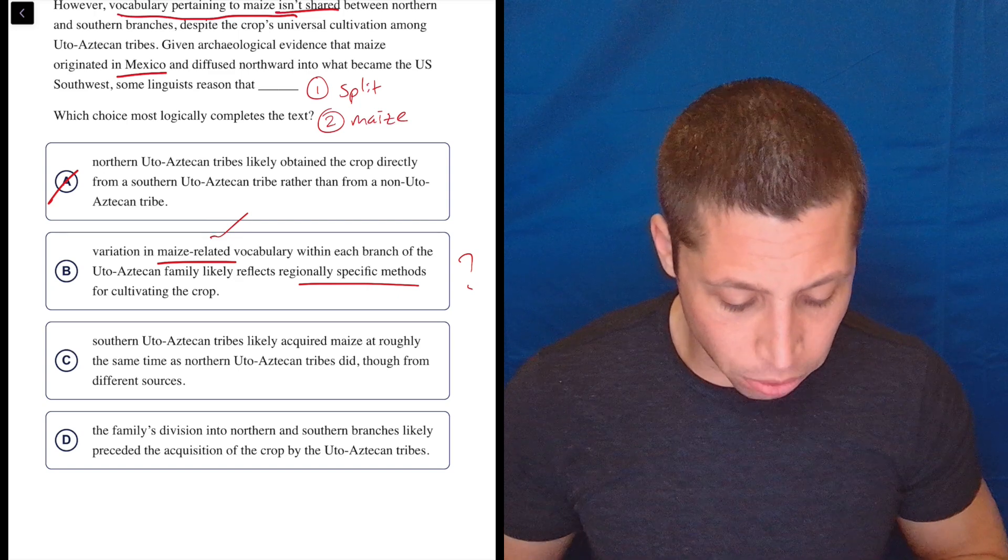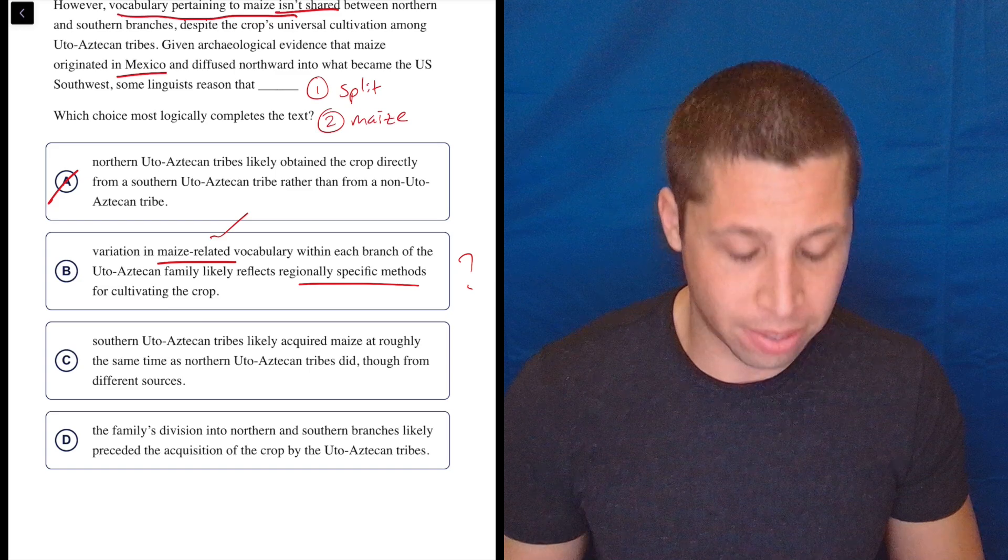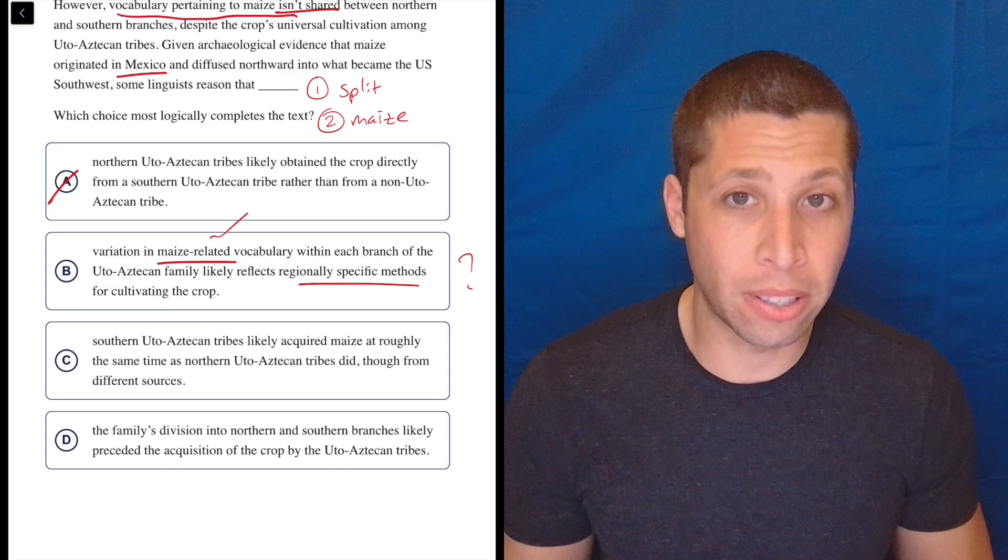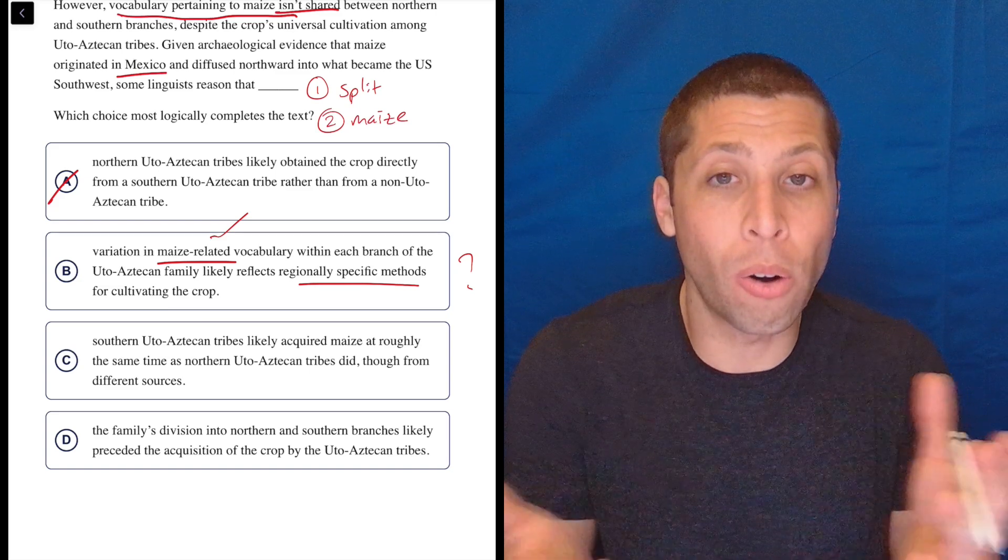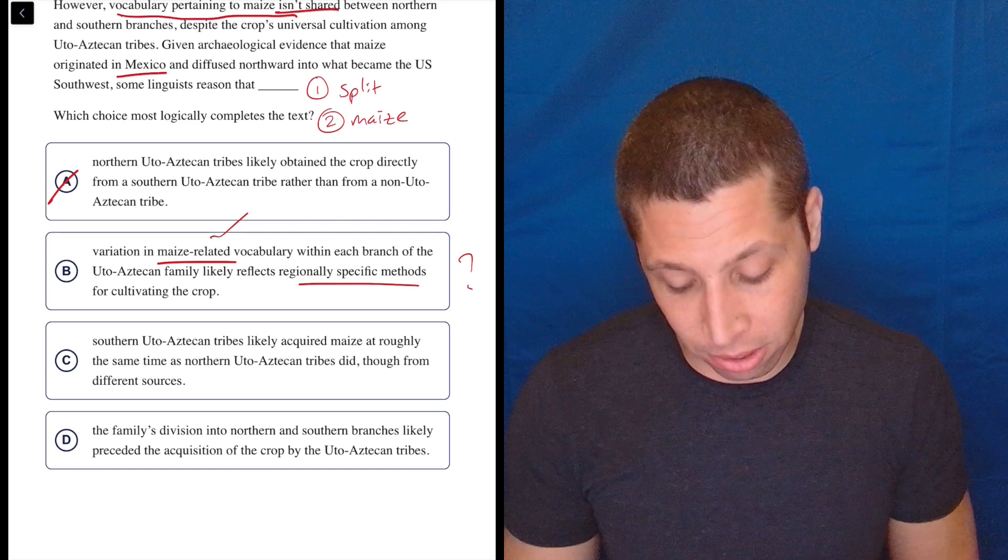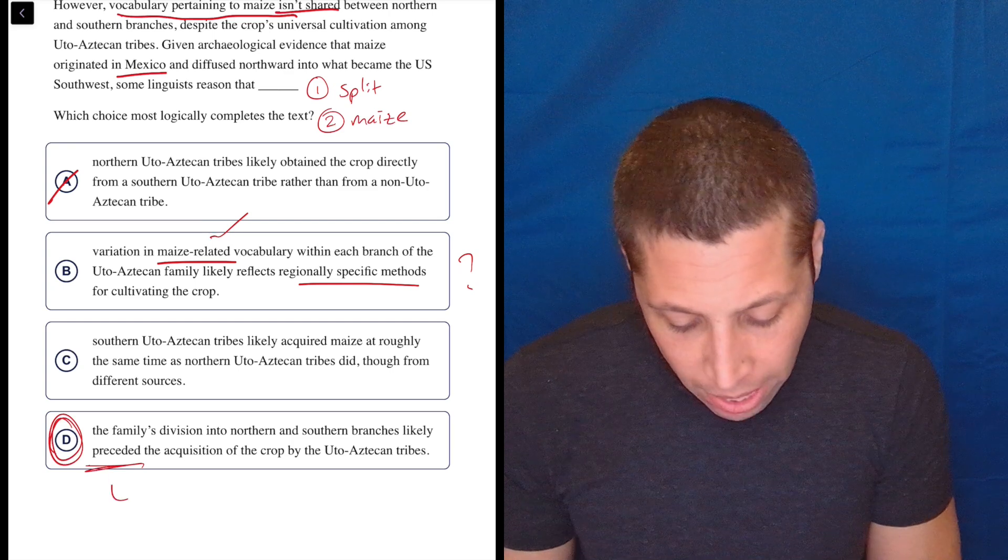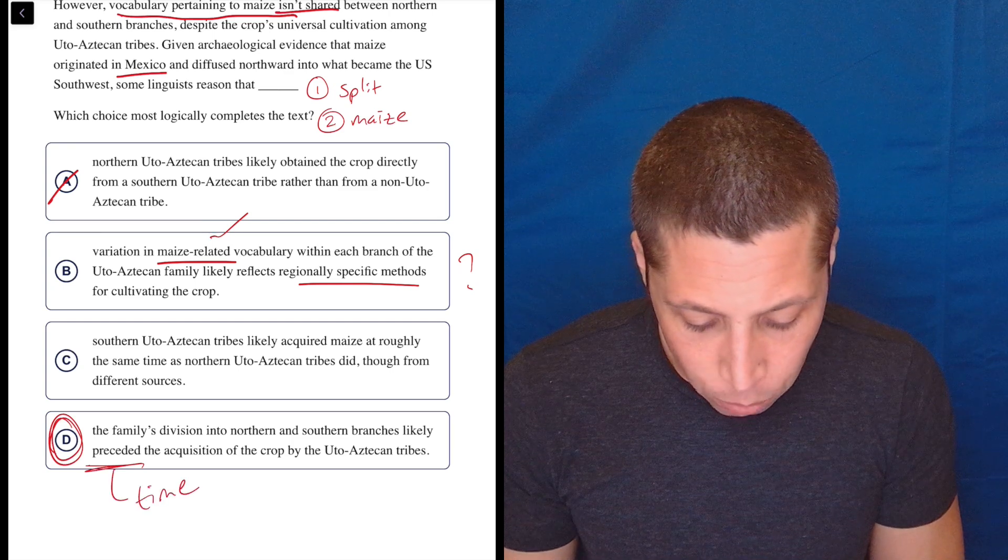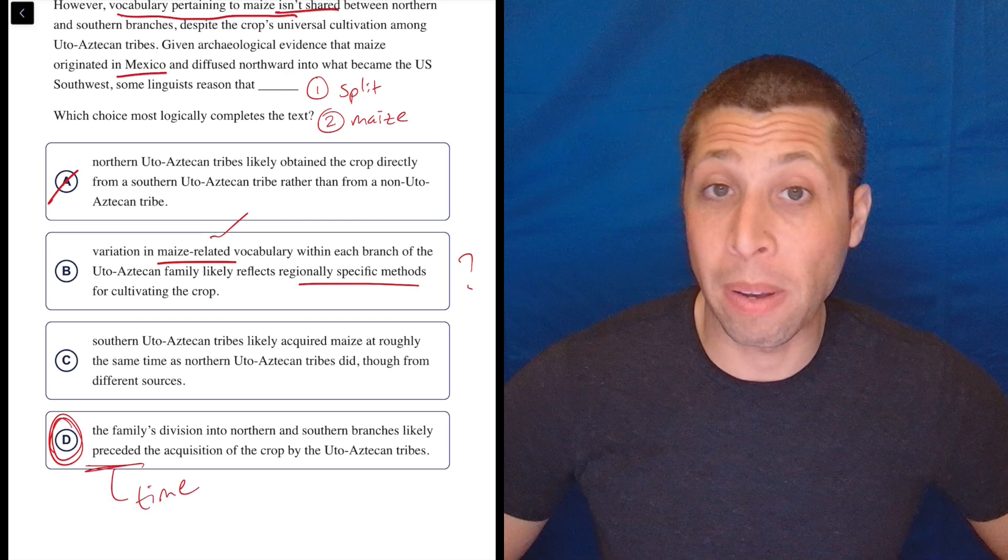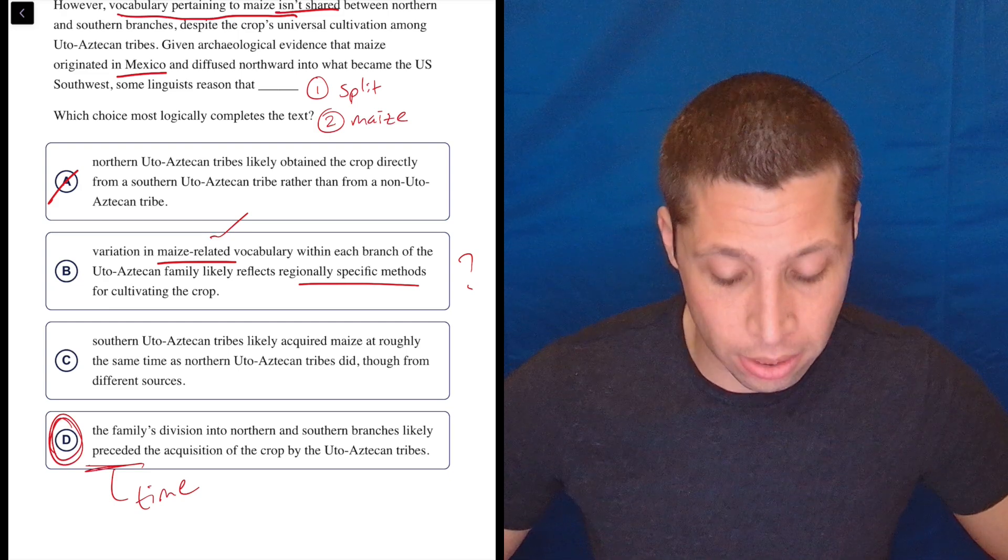Let's look at D. The family's division into northern and southern branches likely preceded the acquisition of the crop by the Udo-Aztecan tribes. Yeah, so why don't they have the same word for it? Because they'd already split off. So, they weren't sharing words anymore. They're now different languages. So, the time aspect preceded.